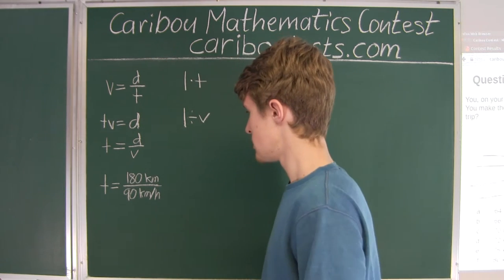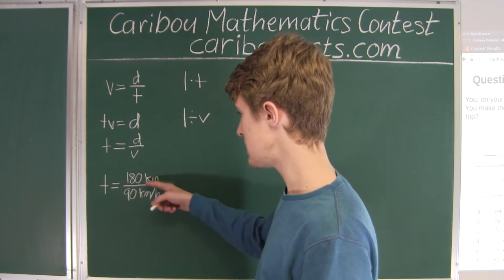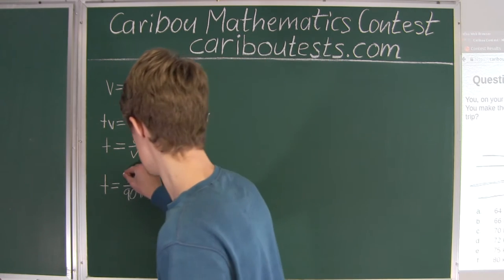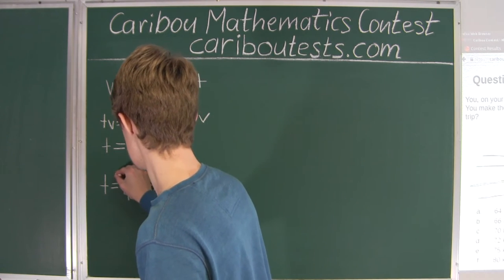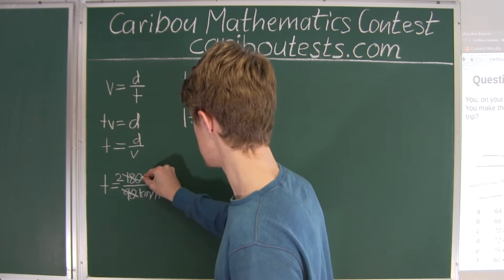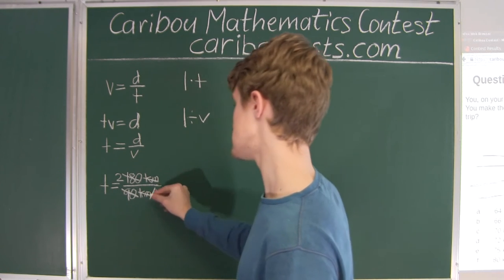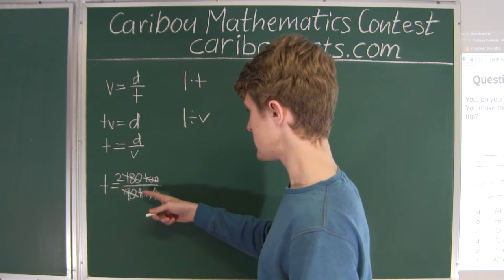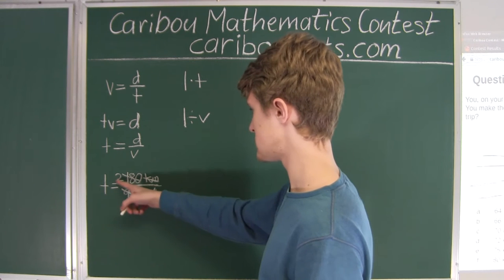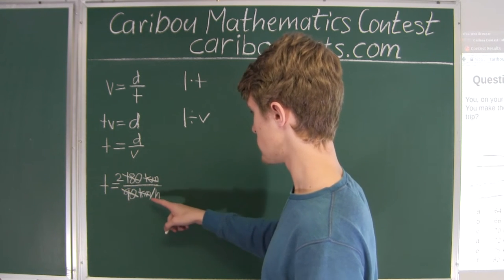First we can do 180 divided by 90, that's just 2. And then we can divide kilometers and kilometers, that's just like 1 over 1. So now what we are left with is 2 divided by 1 over H.